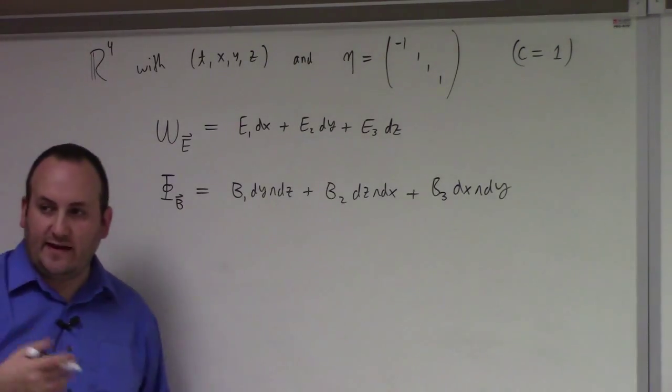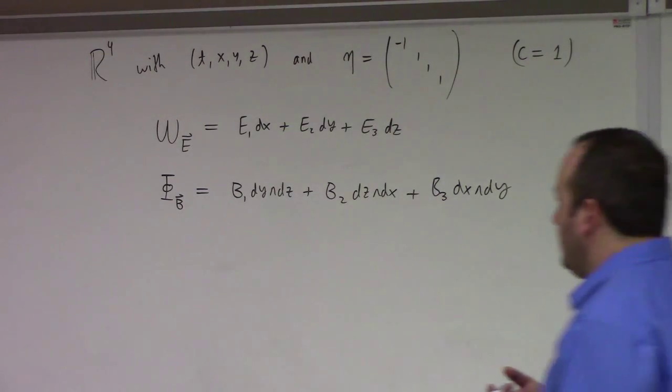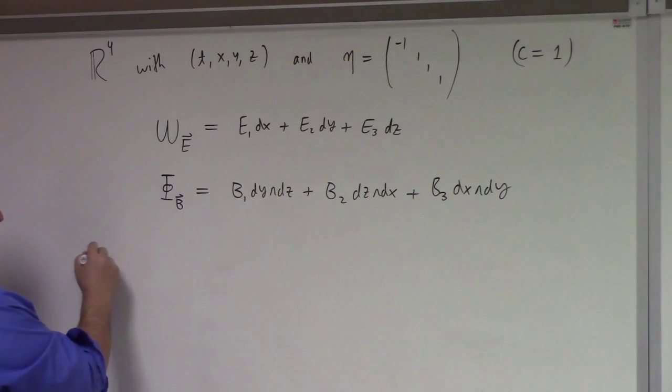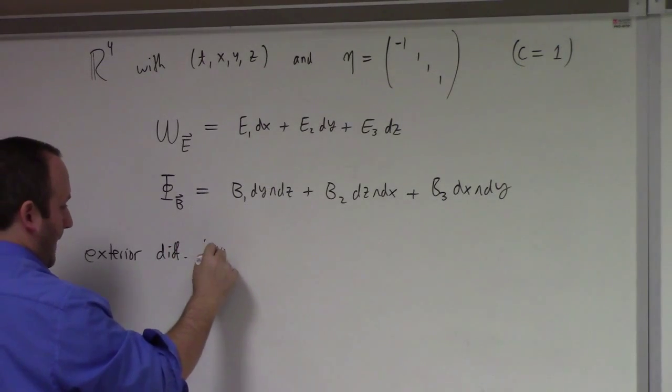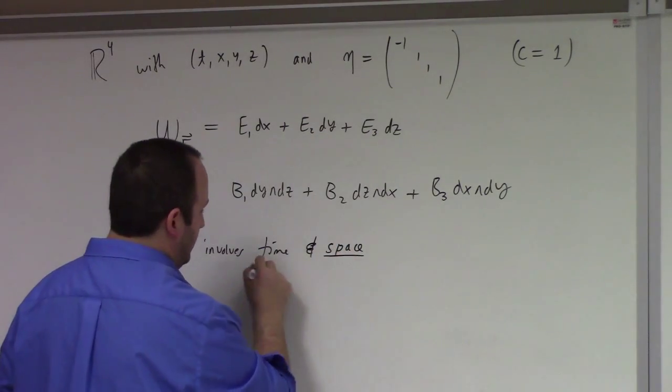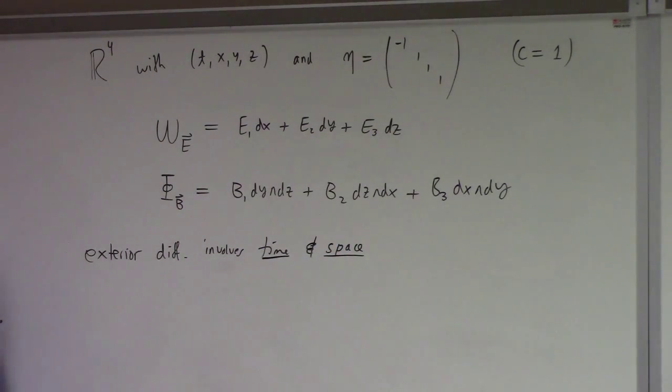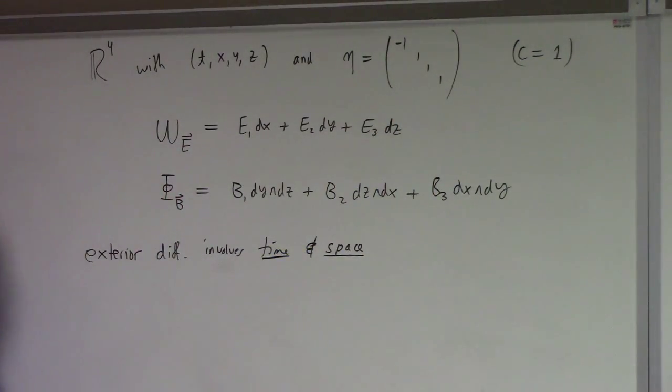Now here, the electric and magnetic fields are both functions of space and time. So if I take an exterior derivative here, it also involves a time derivative. Exterior differentiation involves time and space. Now the space part works just like usual. By the way, the fact that I have 1, 1, 1 here basically means that the flux form and work form mappings work the same way they did in R^3. There's no extra minuses for those alone. When we look at the hodge duality on the whole space, there are some surprises that come from the minus on the time.